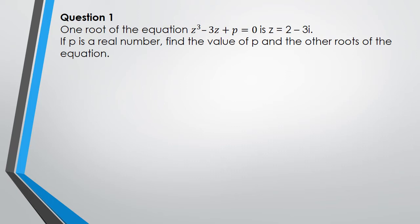Because one of the solutions for z is 2 - 3i, what I could do is substitute it into this equation — it should equal zero because it is a solution. So what I have is (2 - 3i)³ minus 3(2 - 3i) plus p equals zero.